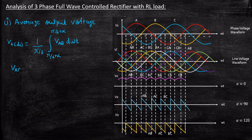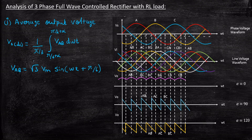You might have a question: what is VAB? VAB is the line voltage, which we found in the previous case. It is equal to root 3 times Vm times sine of (ωt + 30 degrees), that is sine of (ωt + pi by 6). In case you don't understand how this expression was derived, please watch the previous video where it is explained in detail.